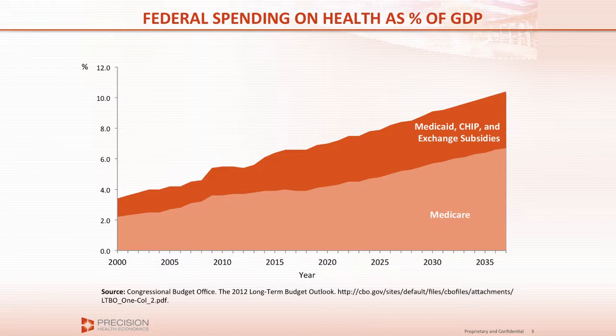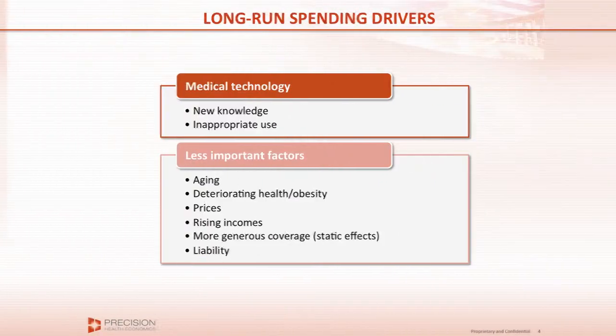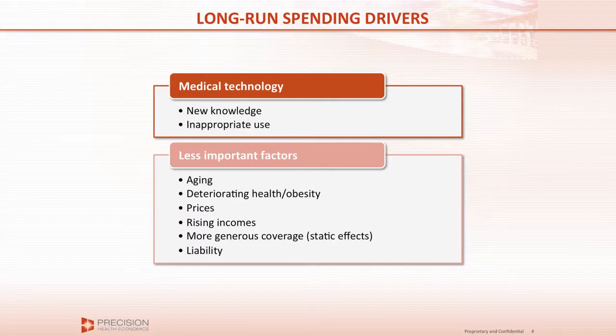These are numbers the CBO has been putting out for a long time. This trend reflects not only the insurance expansion of 2010, but mostly reflects variables like the diffusion and innovation of new medical technologies. All the wonderful work you do is often quite expensive. At the same time, we seem to be getting much sicker as a society, and while aging itself isn't a big driver of spending growth, the fact that we are sicker as we age certainly is.